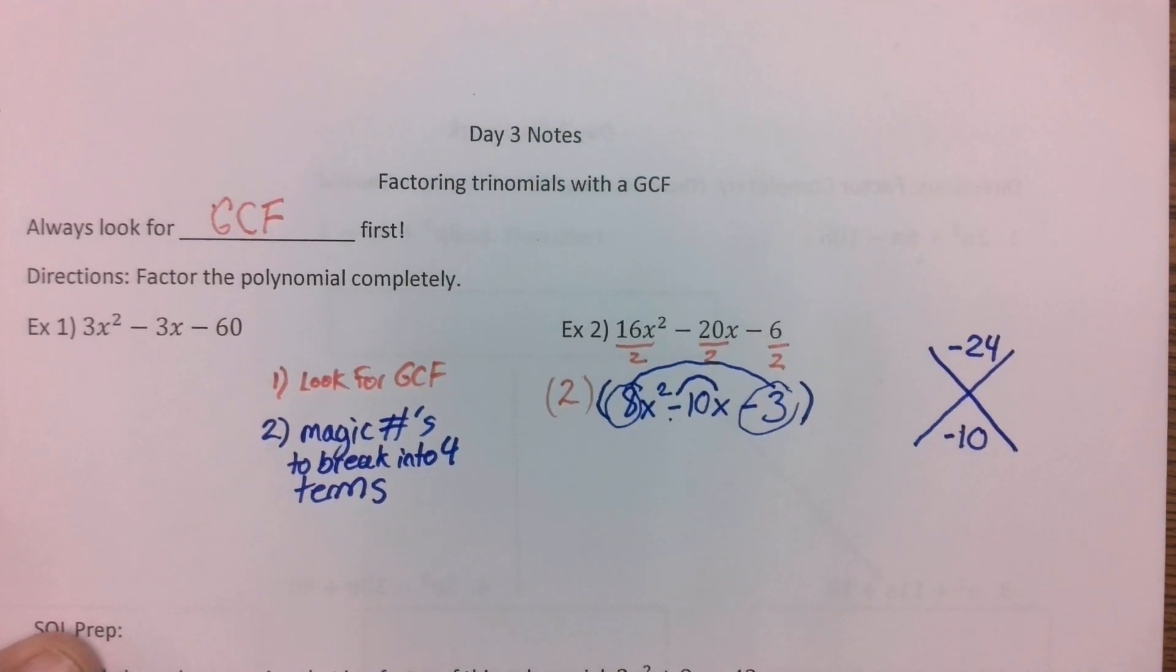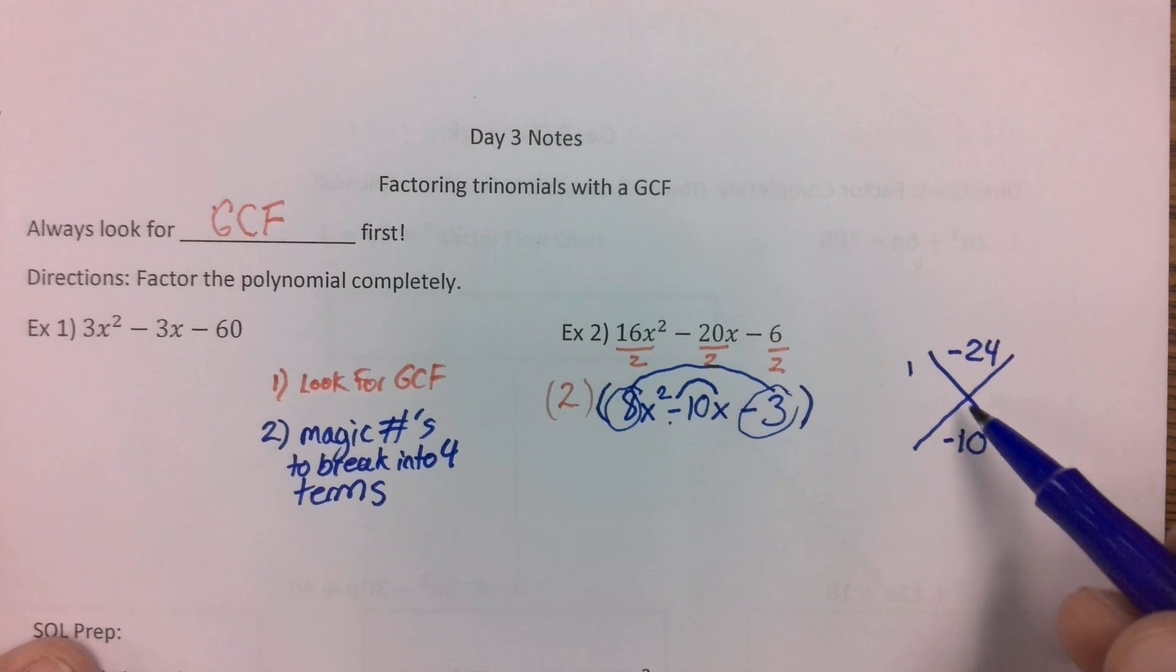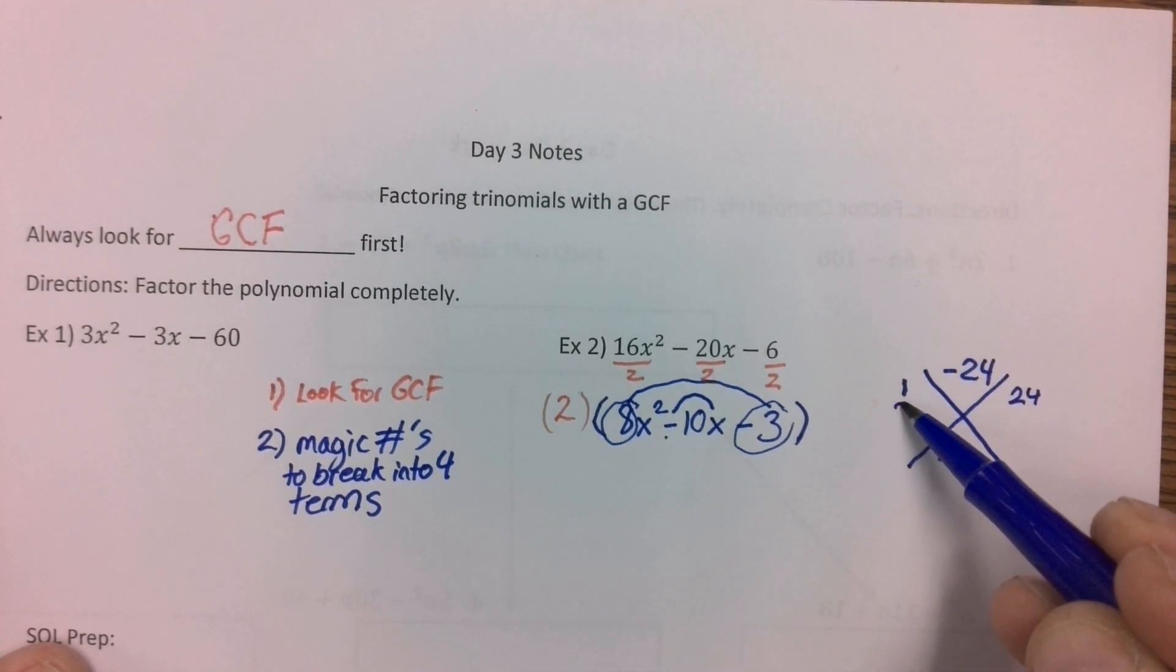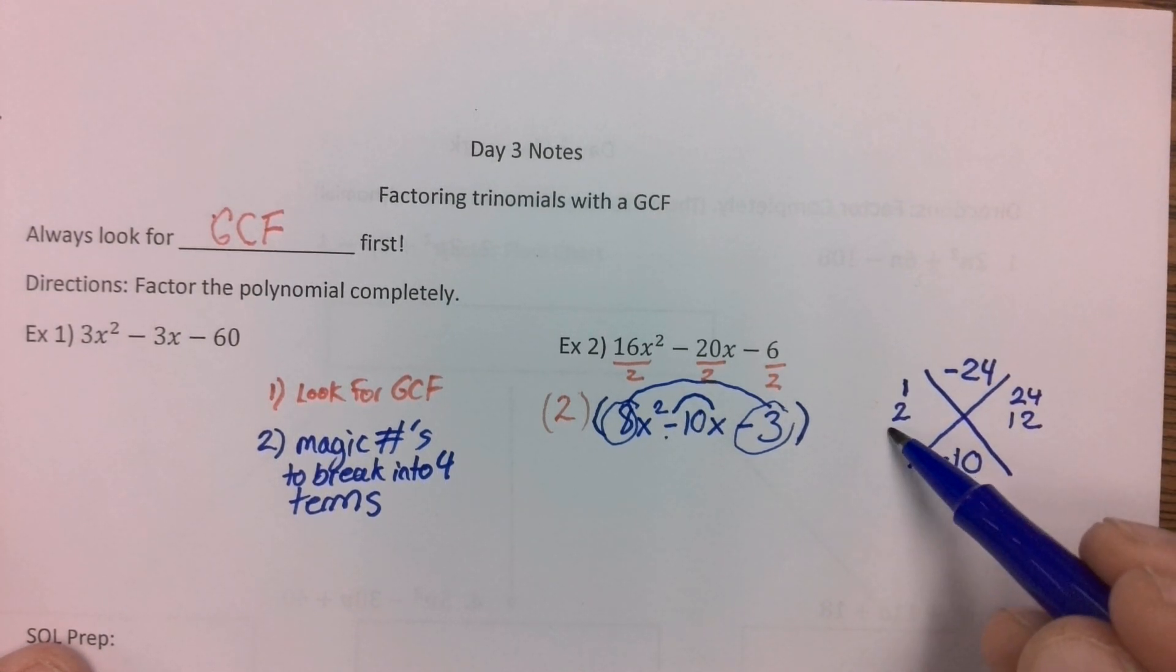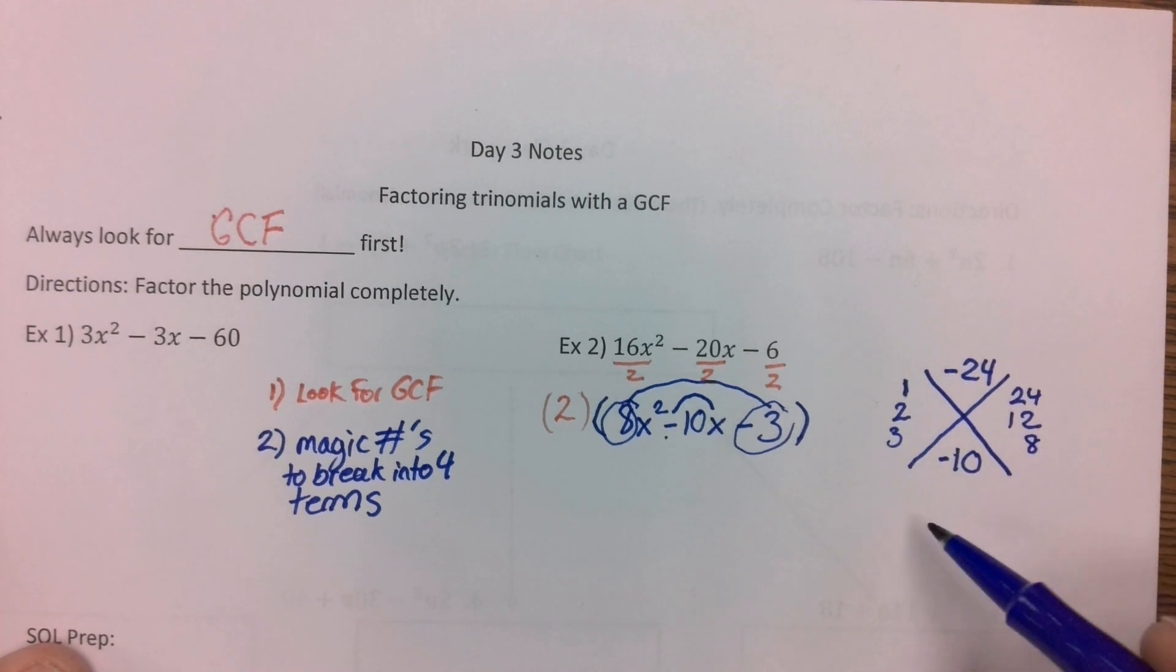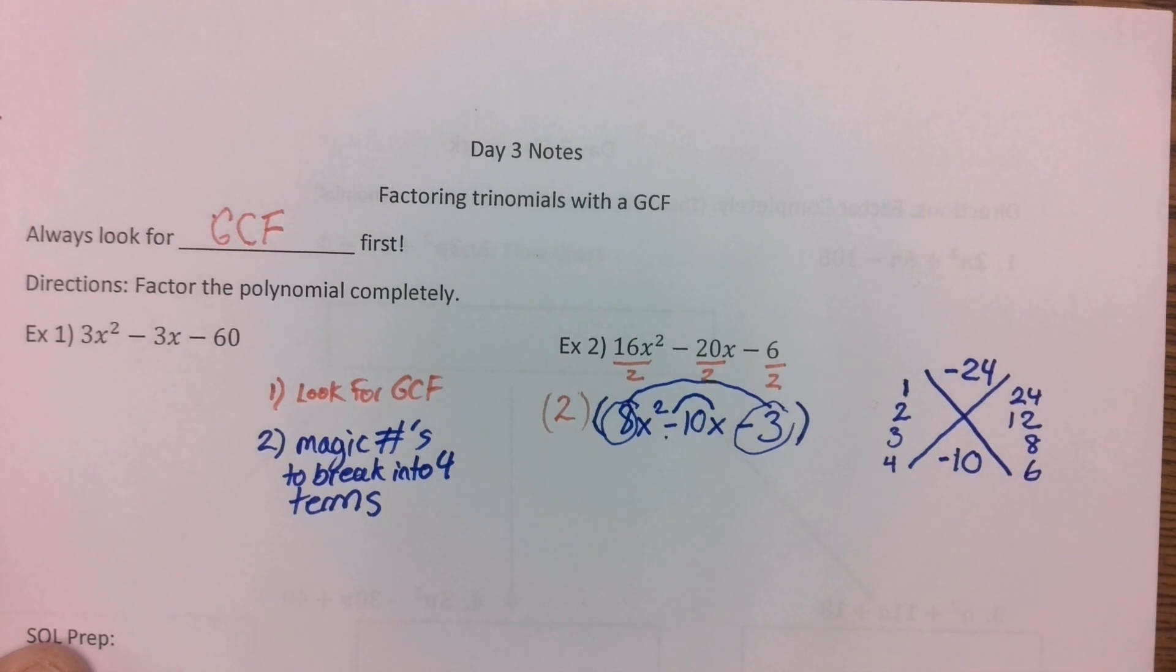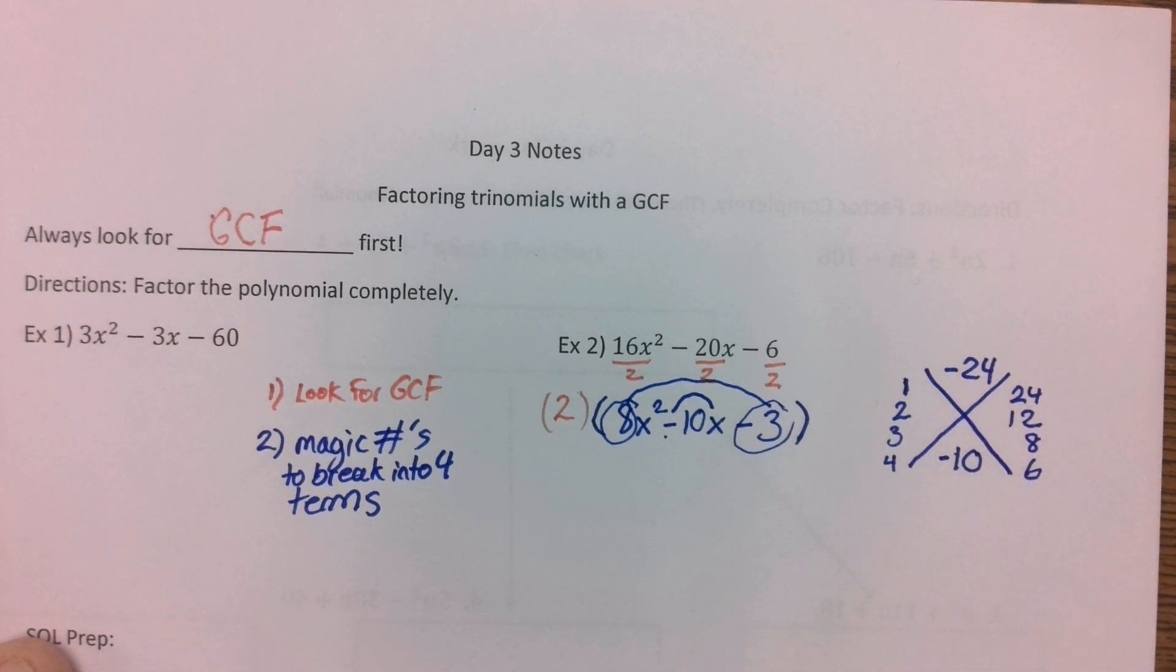So then we find factors of negative 24. And then we start, what times 1 equals 24? 24. Is there something times 2 that could equal 24? Yes. 12. 3 that equals 24? Yep. 8. 4 that equals 24? Yep. 4 times 6 equals 24. 5 equals 24? Nope. Doesn't look like it. And then 6. And then 6, we're back to where we started. Okay?